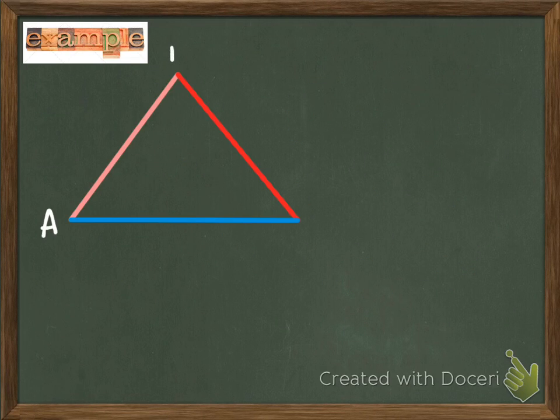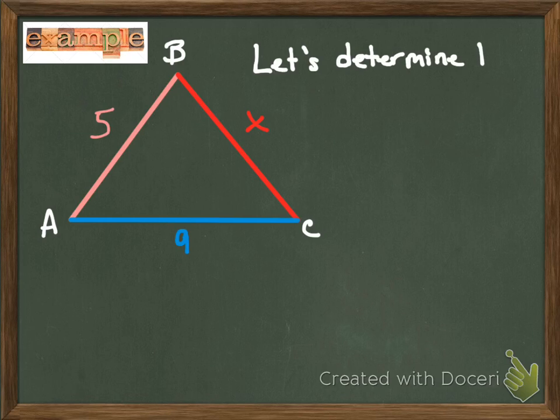Alright, so now let's go ahead and look at another example here. And this one's gonna be slightly different. Again, we're gonna use triangle ABC and I color coded again for you to try and make it a little bit simpler maybe to follow. So what this question is asking or stating says let's determine the possible lengths of X.